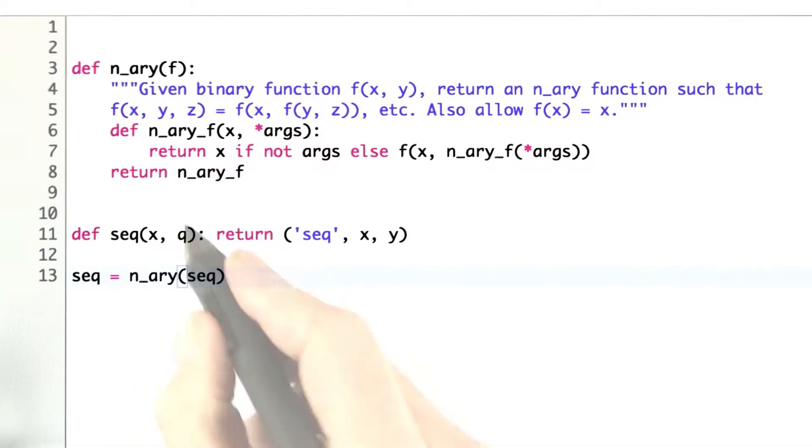I've got to fix this typo here. From now on, I can call sequence and pass it any number of numbers, and it will return the result that looks like that. In fact, this pattern is so common in Python that there's a special notation for it.